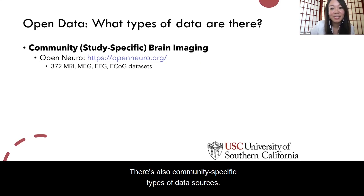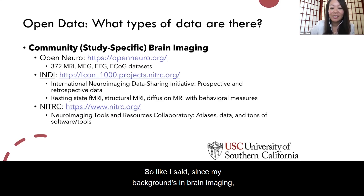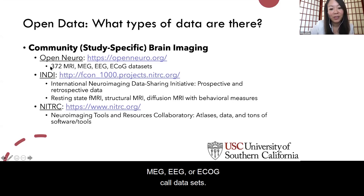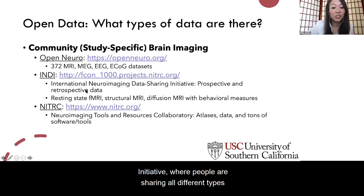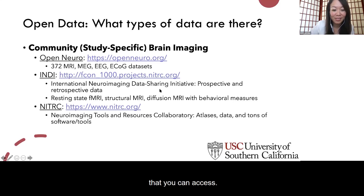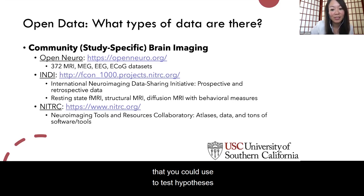There are also community-specific data sources. Since my background is in brain imaging, there are a few sources just for brain imaging data analysis and sharing. OpenNeuro has over 370 MRI, MEG, EEG, or ECoG data sets. There's also the International Neuroimaging Data Sharing Initiative, where people are sharing MRI, fMRI, diffusion, and other data types. And then there's NITRC, an NIH-funded resource with not only data but also tons of software, tools, and atlases. These are just a few examples of open data sources you could use to test hypotheses, look at covariates, or diversify your data questions.